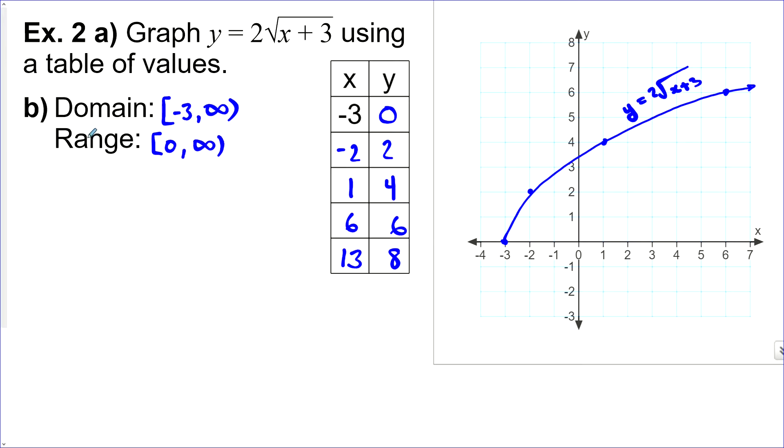Let's do the domain and range in set builder notation. So, we've got our bracket here, and our variable is x is such that x is greater than or equal to negative 3, and x is a real number. And our range, y is such that y is greater than or equal to 0, and y is also a real number. And you need to know both of these forms for domain and range.